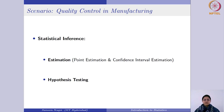In hypothesis testing, somebody first makes a claim and your goal is to test whether that claim is correct. Suppose somebody says the average salary of people in your city is 40,000 or less than 40,000. You might then draw a random representative sample, do different analyses, and come up with whether the claim which was made was correct or not. These are the major concepts which come under statistical inference, and from here on in this course, we are going to address each of these one by one.